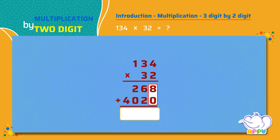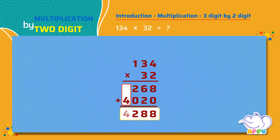Eight plus zero equals eight. Six plus two equals eight. Two plus zero equals two. Zero plus four equals four. So the answer is 4,288.